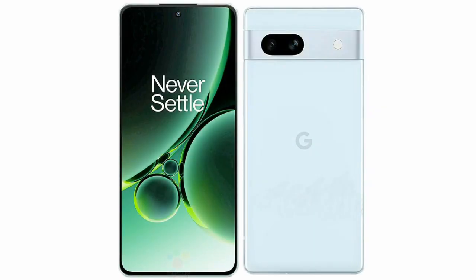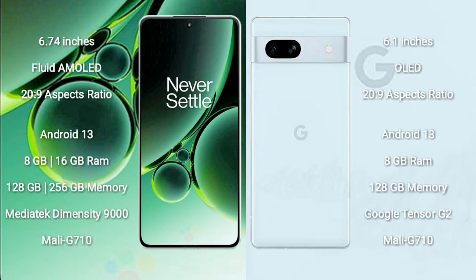I will compare the new OnePlus Nord 3 with Google Pixel 7a. OnePlus Nord 3 comes with a 6.74-inch flat AMOLED display and aspect ratio 20:9. Google Pixel 7a comes with a 6.1-inch OLED display and aspect ratio 20:9.